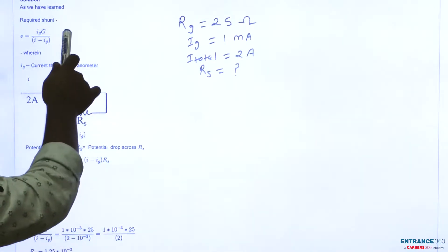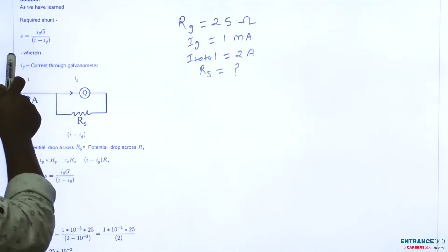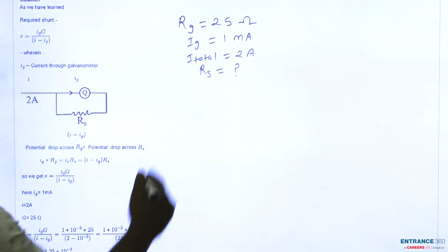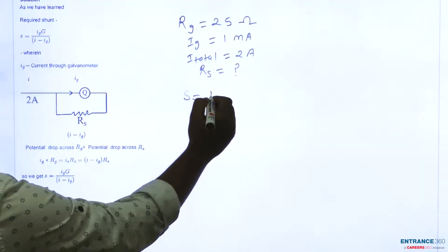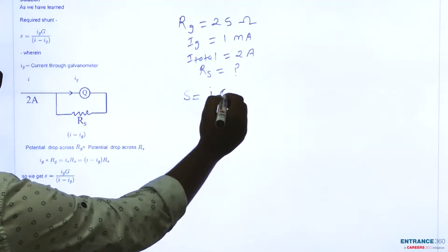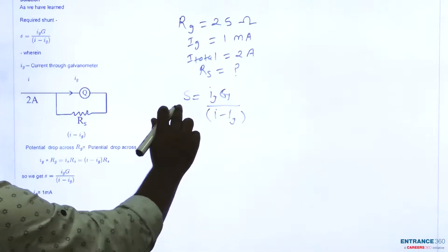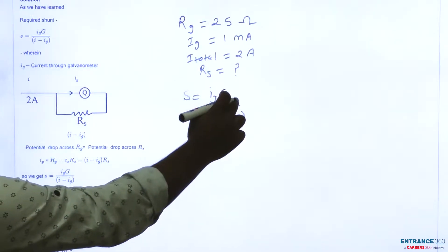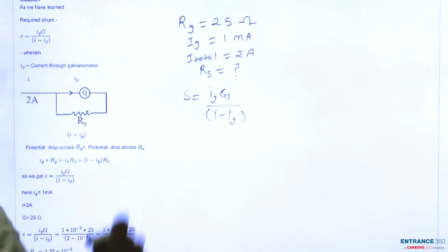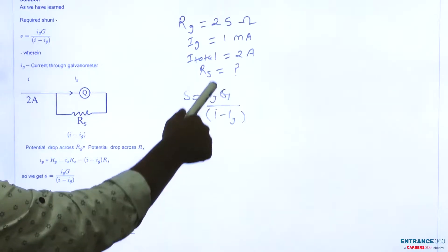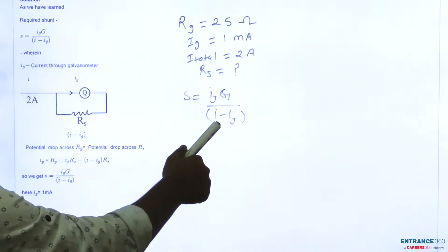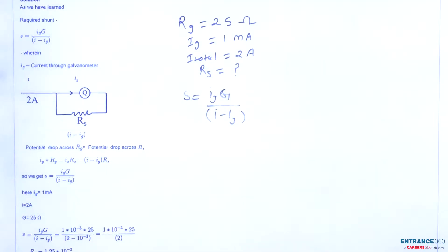The concept here says the value of required shunt resistance is given by this formula, that is S equals Ig into G upon I minus Ig, where S is the shunt resistance and G is the resistance of the galvanometer and Ig is the current through galvanometer and I is the total current.